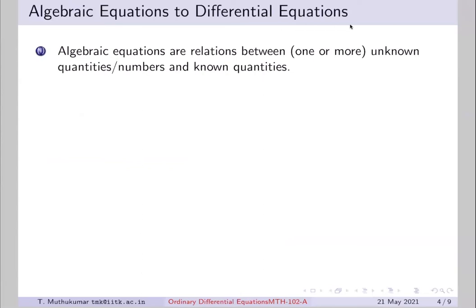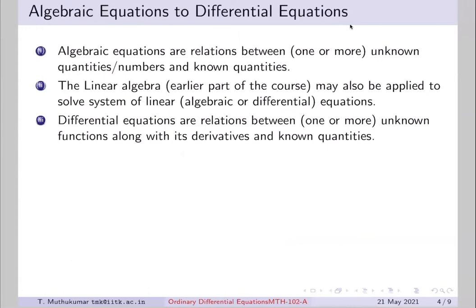Since you have seen only algebraic equations so far, there is not much difference in the idea. Any equation is a relation between known and unknown quantities. In an algebraic equation, you have an unknown variable x — possibly more than one. You solve for the unknown variable. Whereas in a differential equation, the unknown is a function, and there is a relation between the unknown function with some known quantities or known functions, which you use to solve for the unknown.